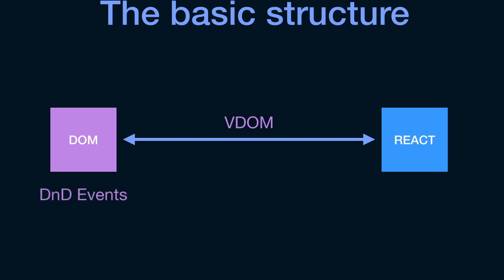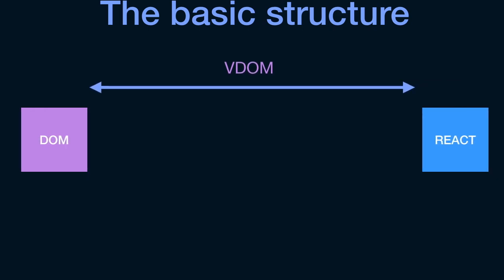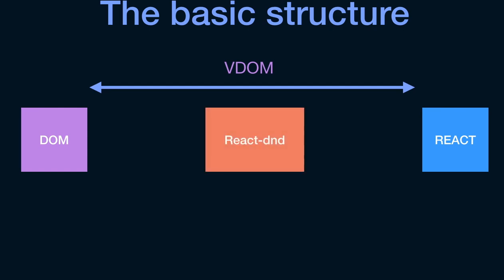All the drag-and-drop events are happening on the DOM side, so we need a way to communicate and handle all those events and pass them back to React. This is exactly where the React DnD library comes in — it sits in between React and the DOM. React DnD communicates in both directions: there are many interactions between React DnD and the DOM, and also between React DnD and your normal React components.